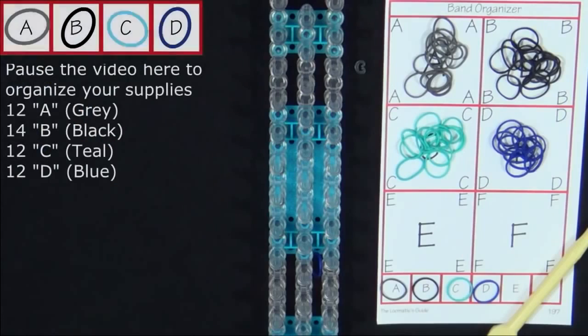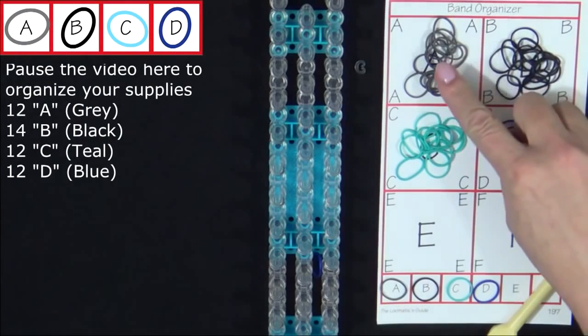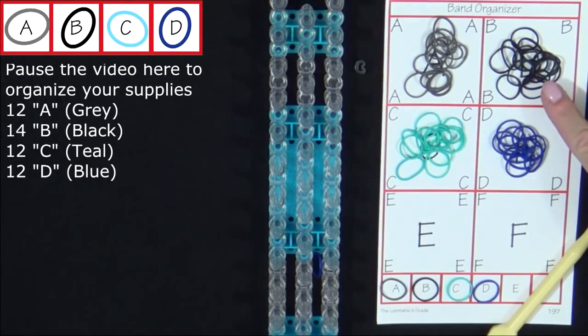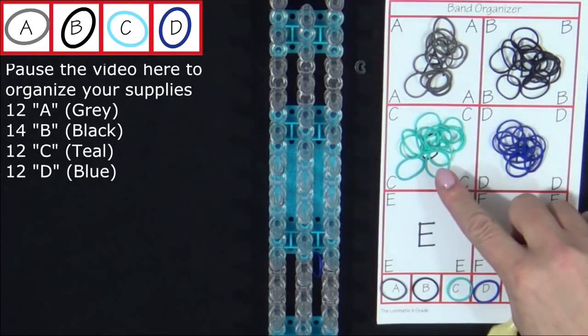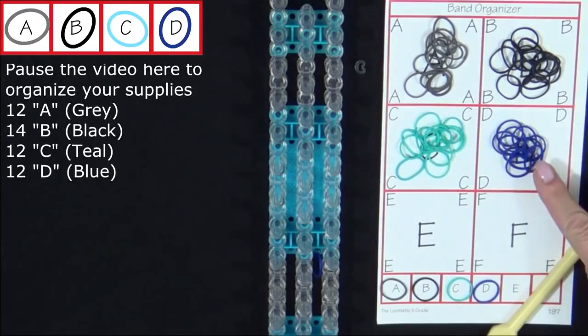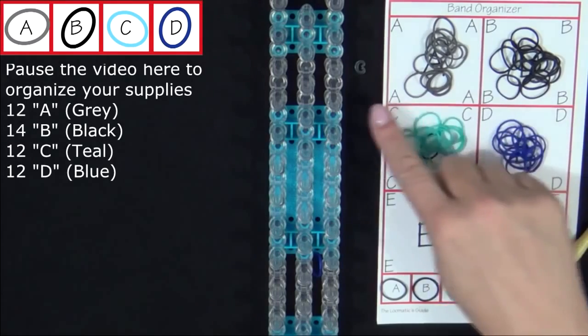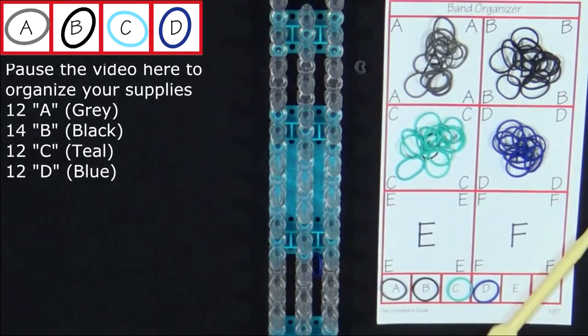To make this bracelet you will need 12 A colored bands, 14 B colored bands, 12 C colored bands, and 12 D colored bands. You'll also need your C clip. It's a good idea to have these supplies ready before you begin. So pause the video here until you're ready to follow along.